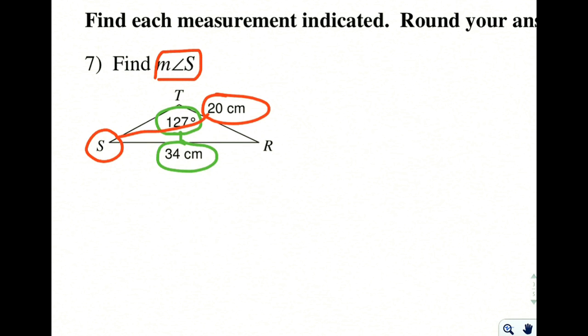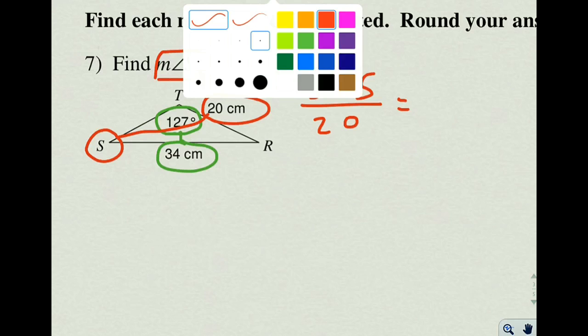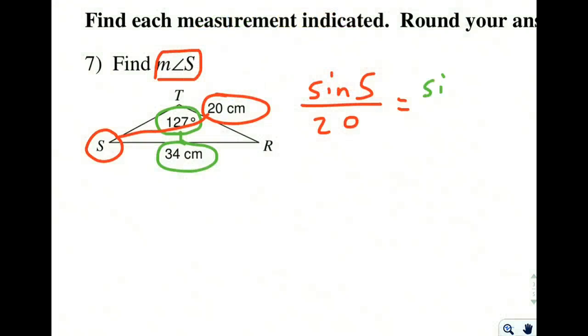To do that then, we could set up the ratio the sine of angle S divided by the side opposite it, which is 20, is equal to the sine of 127, because we're given that angle,